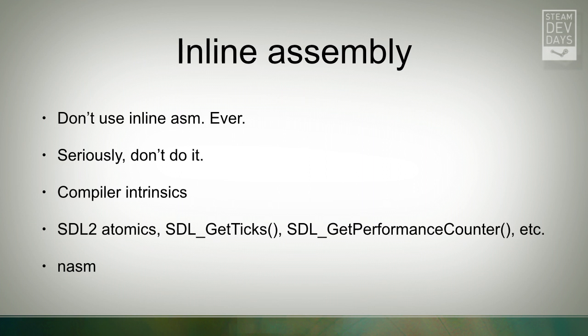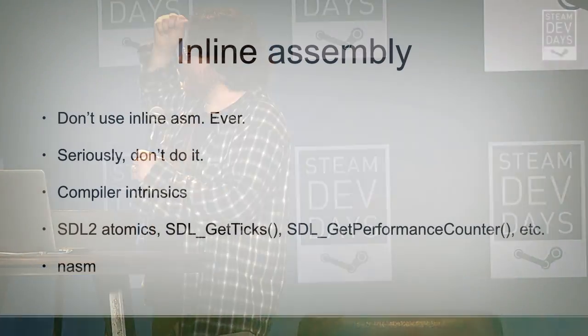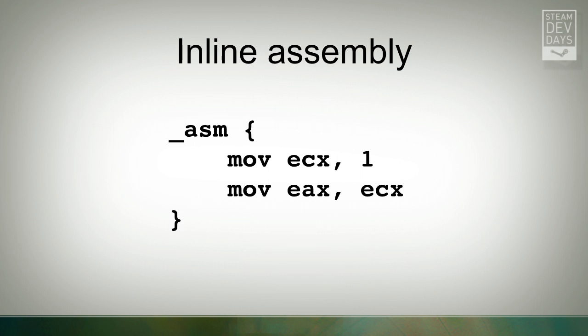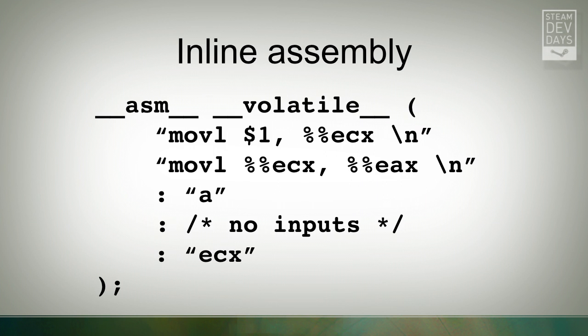SDL offers functionality for all the other things you would want. If you want atomic operations, there's an API for that which handles it on your platform. If you want performance counters like Windows' QueryPerformanceCounter, there are SDL operations for that. Also, for those on Win64 — you can't do inline assembly with Microsoft's compiler targeting 64-bit Windows anyway, so you have to use an external assembler. There's something called NASM — it's open source and understands Intel-syntax assembly. Also worth noting: the assembly opcode operand order is reversed between MASM and GCC syntax, which is another reason to just get rid of the assembly language.